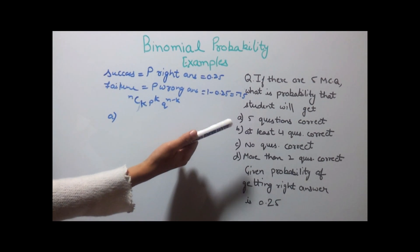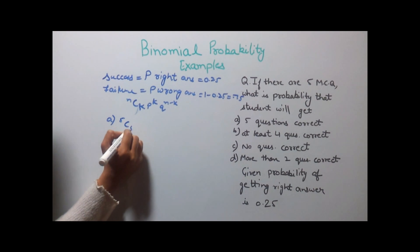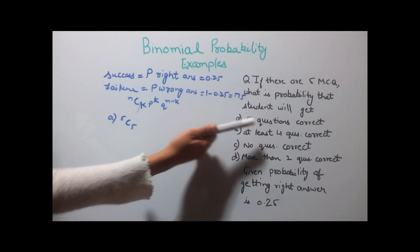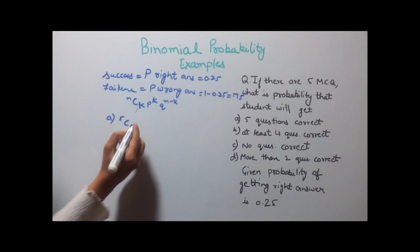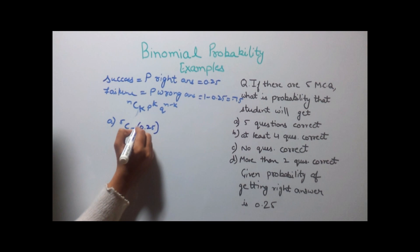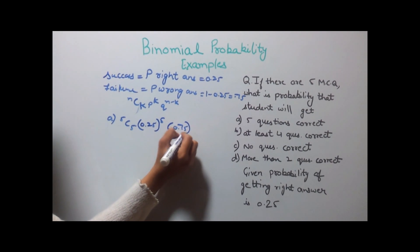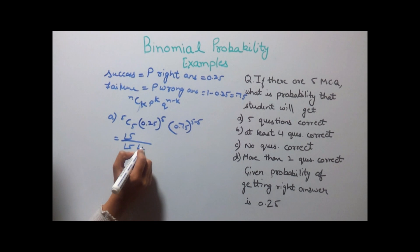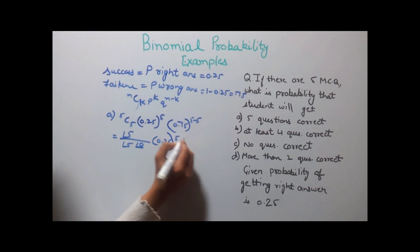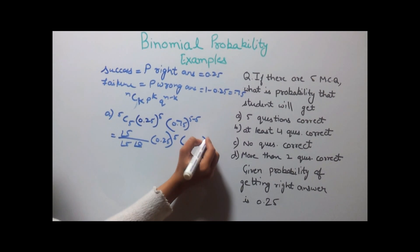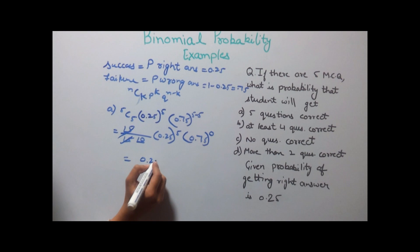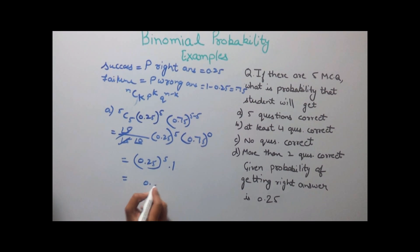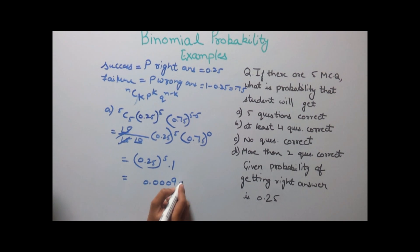Our first part says 5 questions are correct. So the formula becomes 5C5. n is equal to 5 because there are 5 multiple choice questions and k is also 5 because we need to check the probability of 5 correct answers. p is 0.25 to the power 5, into 0.75 to the power 0. Cancelling, we get 0.25 to the power 5 into 1. Solving this gives 0.00098 as the answer.